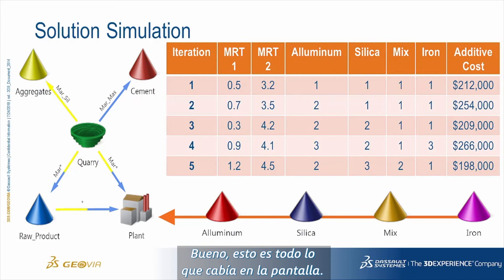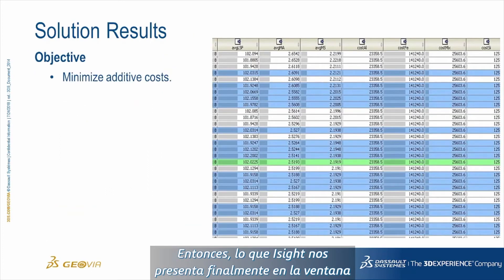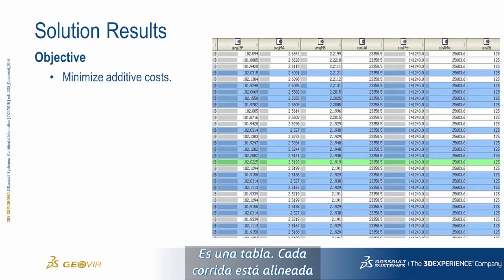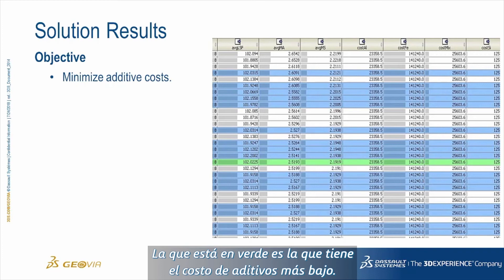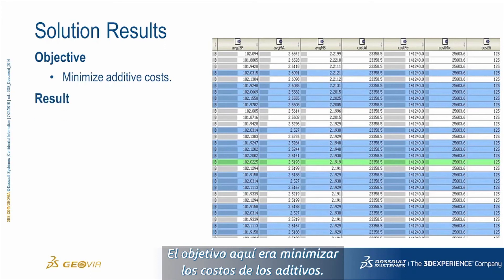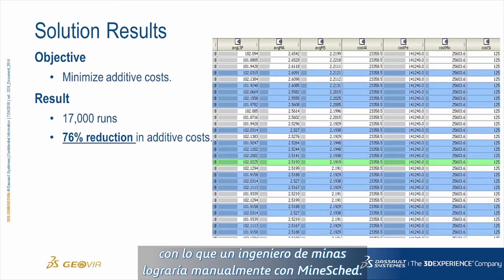In this example it would be run number 5. It's easy to run an iSight model several hundred or even several thousand times. In the end, iSight presents results in the results analysis window in tabular form — every single run is a line and the columns constitute all of the inputs and outputs. The one in green has the minimum additive cost. The results after 17,000 runs showed a 76% reduction in additive costs over what a mining engineer was able to produce manually in Mindshed.